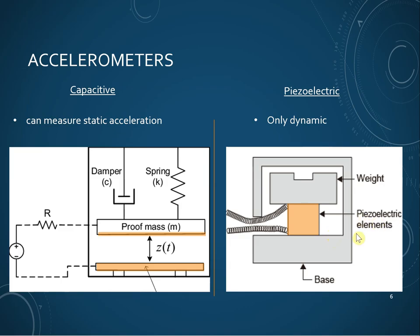The key difference between these two accelerometers is that capacitive accelerometers can measure static acceleration — a very good example of static acceleration is the gravitational pull of the earth — whereas piezoelectric accelerometers cannot. That's really the main difference between the two.